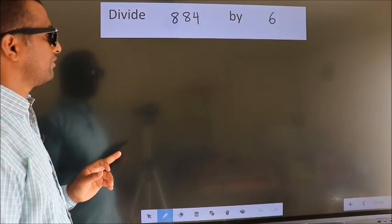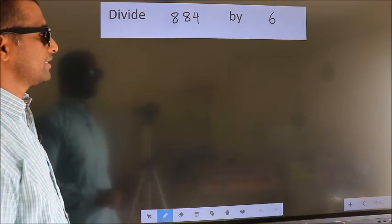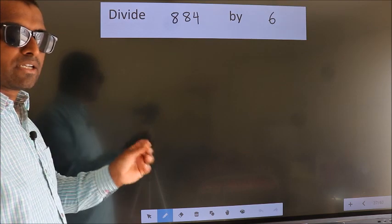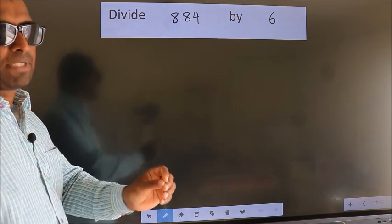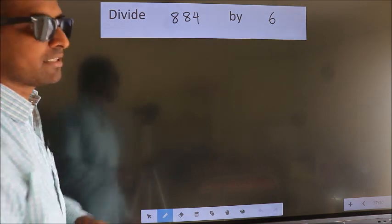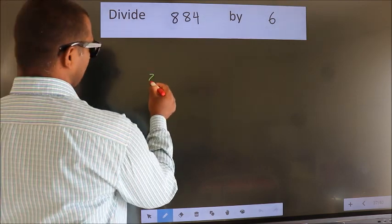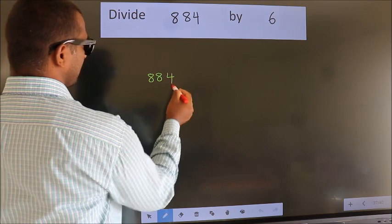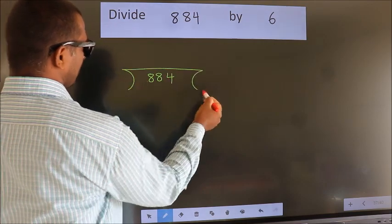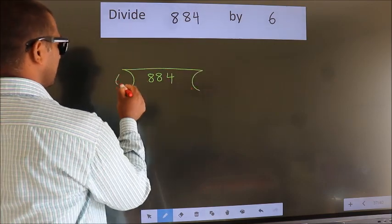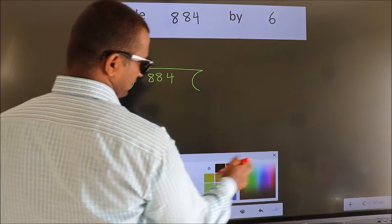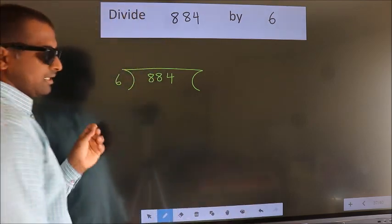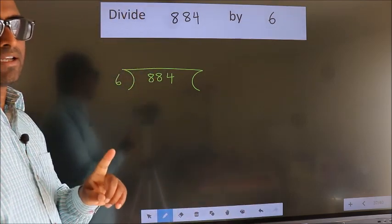Divide 884 by 6. To do this division, we should frame it in this way: 884 here, 6 here. This is your step 1.